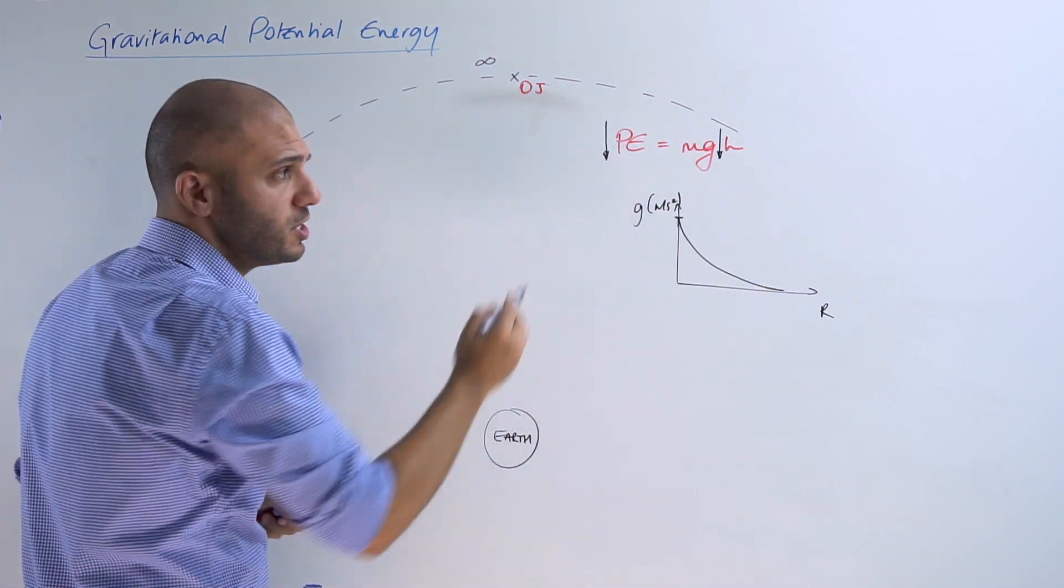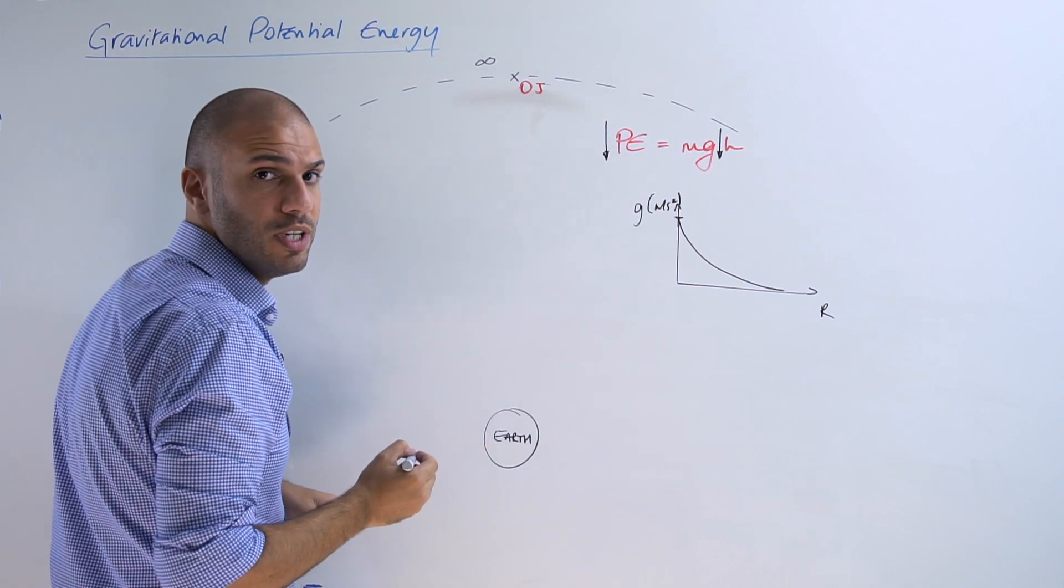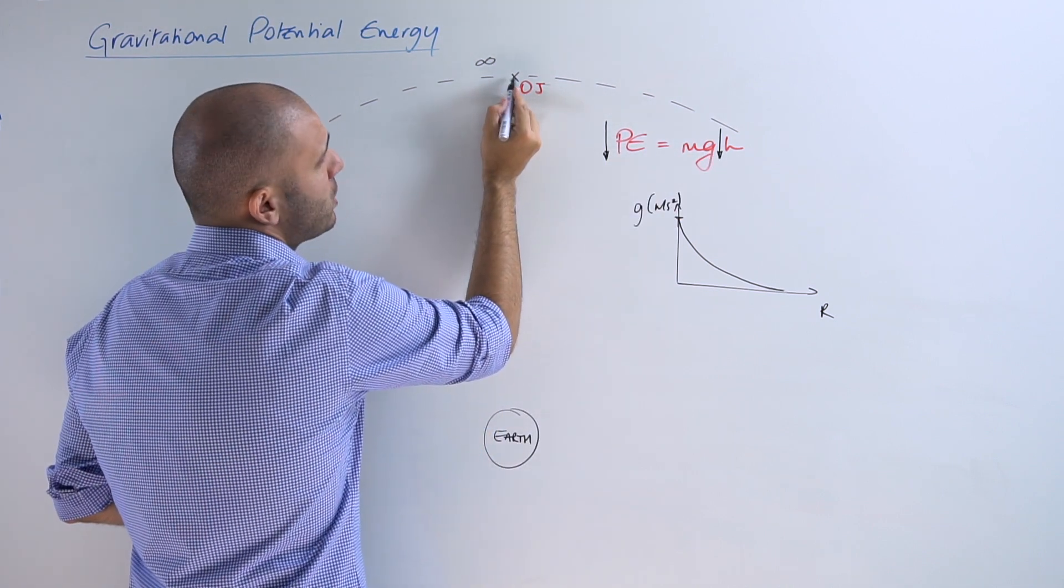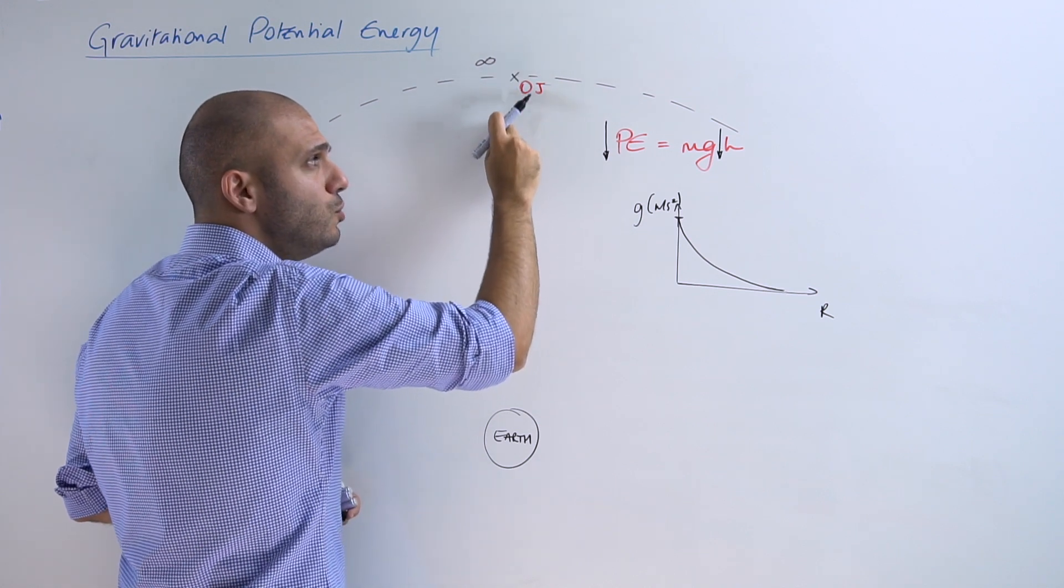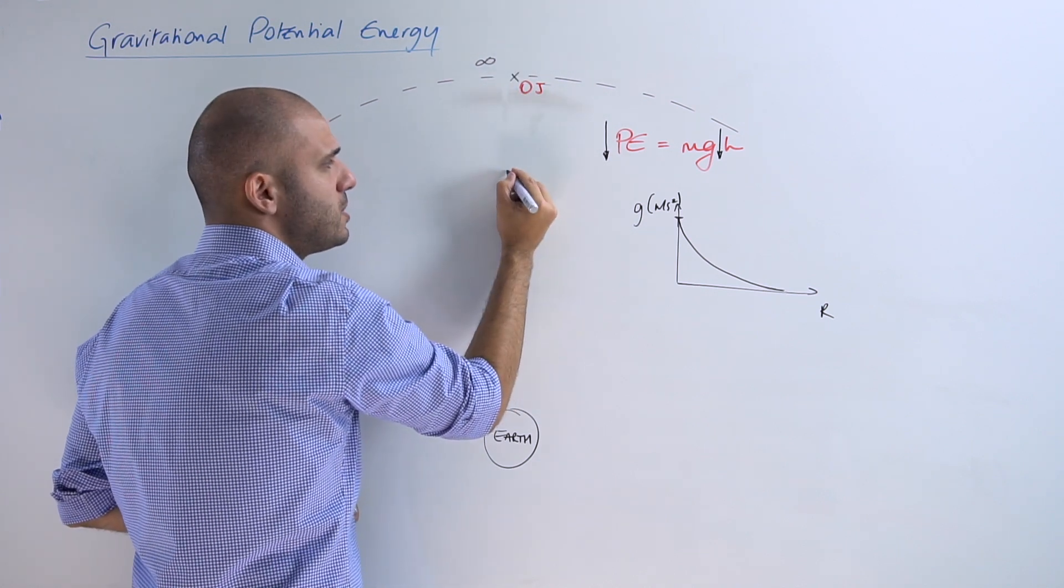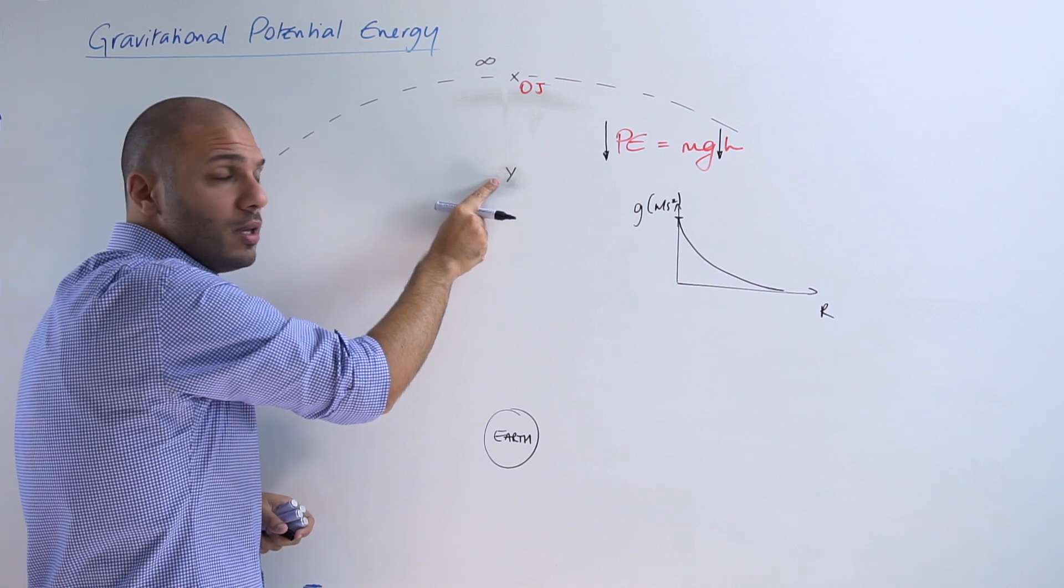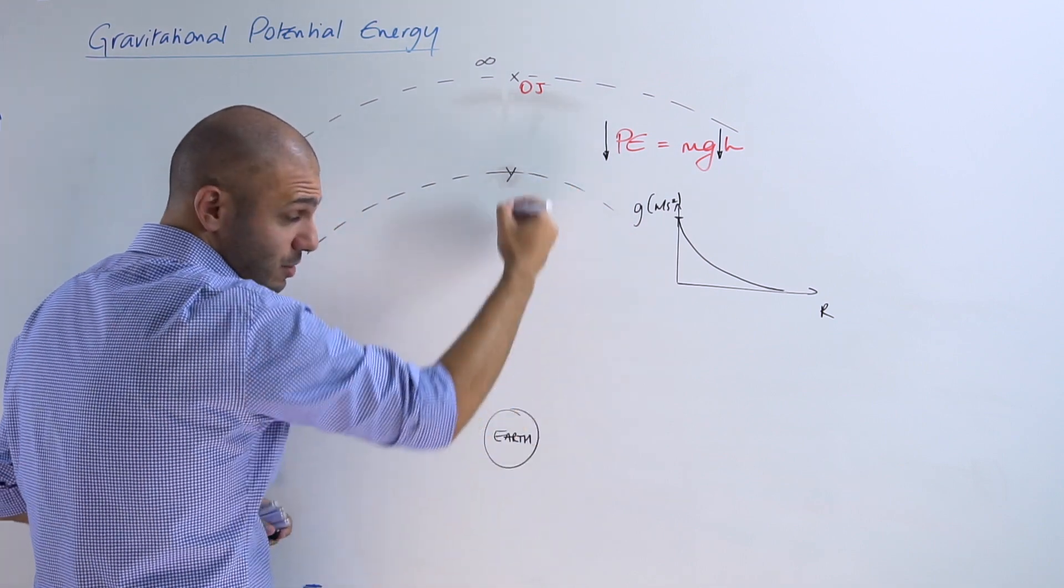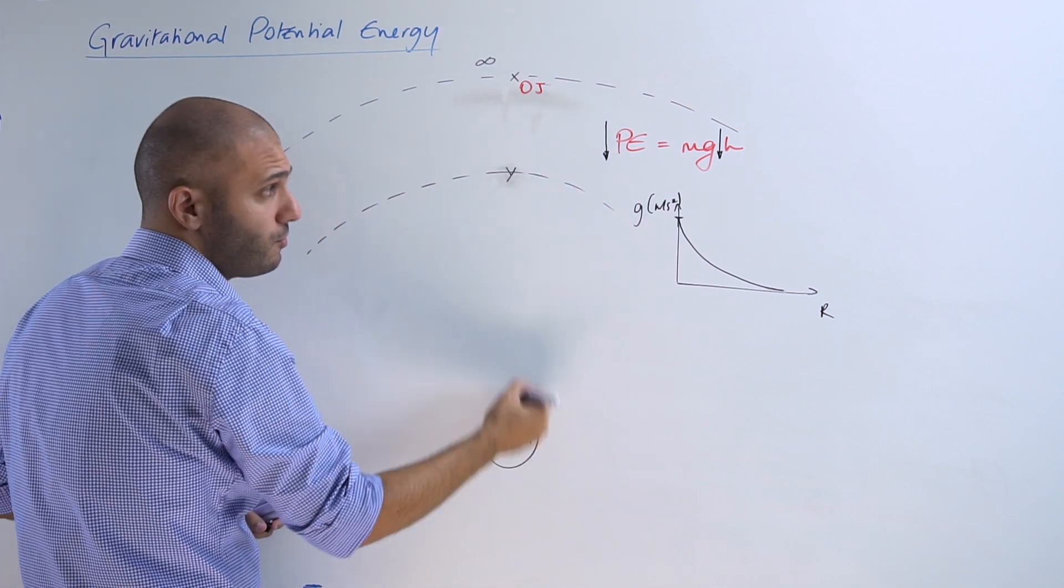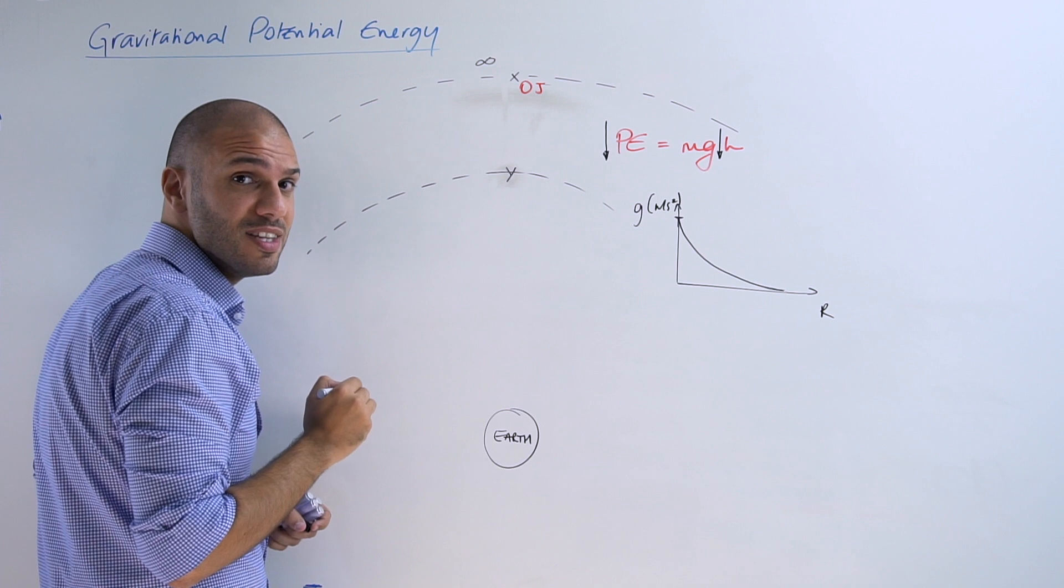That means that if an object starts off here at X and then it moves downwards and ends up say at point Y, which obviously Y is at a smaller distance away from Earth than point X is.